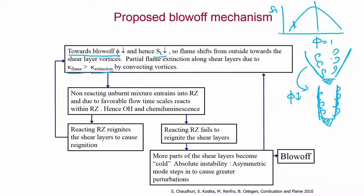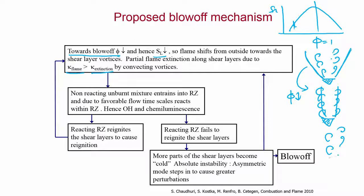Once the flame is extinguished along the shear layers, unburnt reactants can be entrained into the recirculation zone. Due to favorable flow time scales there, they can react within the recirculation zone. Hence, we observe OH chemiluminescence from within the recirculation zone. The reacting recirculation zone can then reignite the shear layers — transferring heat into the regions still containing unburnt reactants — and as a result the flame can again be formed.